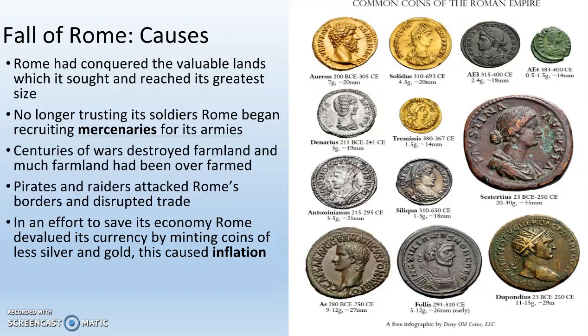Rome had conquered the valuable lands it had sought and reached its greatest size. Unfortunately, citizens of Rome no longer wanted to be soldiers, so it became the poor of Rome — and eventually the poor didn't even want to be soldiers. So the Roman Empire had to start hiring mercenaries. A mercenary is someone fighting as a soldier solely for money — not patriotism, not nationalism, not to protect their country — just money.